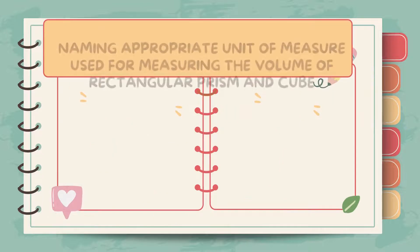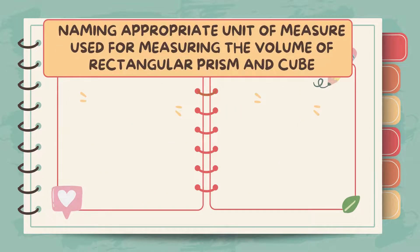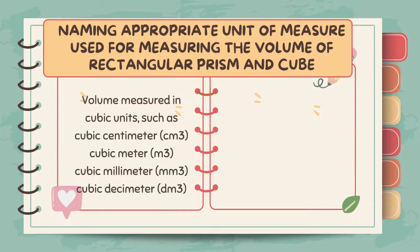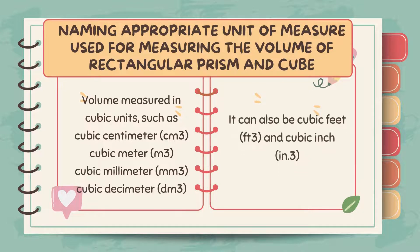Now, let's name appropriate units of measure used for measuring the volume of rectangular prism and cube. Volume is measured in cubic units, such as cubic centimeter, cubic meter, cubic millimeter, and cubic decimeter. It can also be cubic feet and cubic inch.